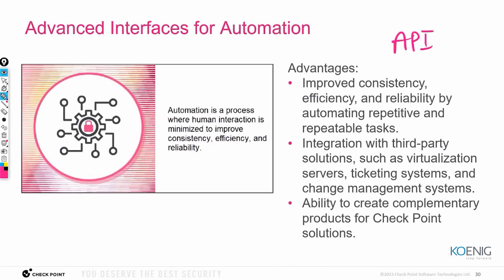When CLI and GUI were already there, why do we need API? We need it because of cloud. Every vendor wants their solutions to be integrated with the cloud. API is a special language that makes a device compatible with cloud language. Due to API, the cloud can integrate Checkpoint, and through the cloud you can achieve whatever you want.